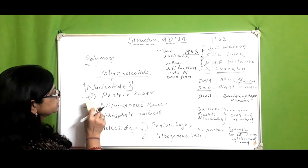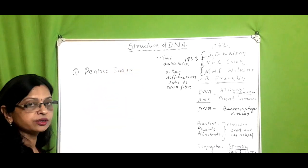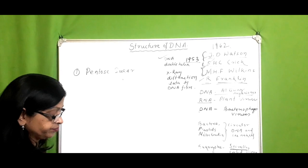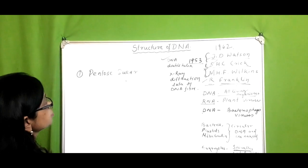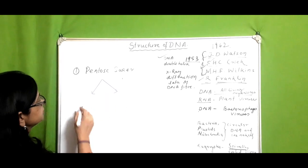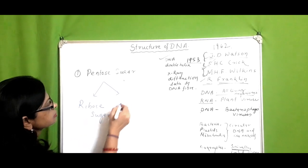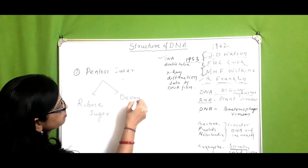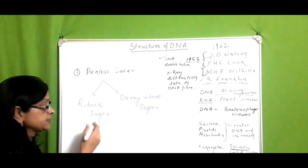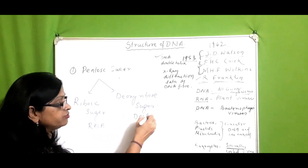First we will look at the pentose sugar. The name pentose sugar means it is a five-carbon compound. The pentose sugar is of two types: ribose sugar and deoxyribose sugar. Ribose sugar is present in RNA, while deoxyribose sugar is present in DNA.